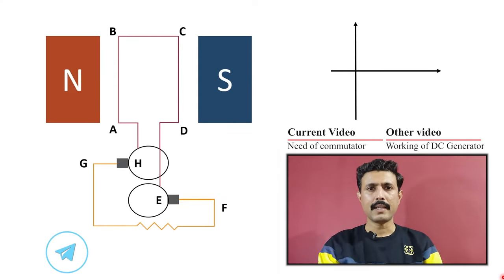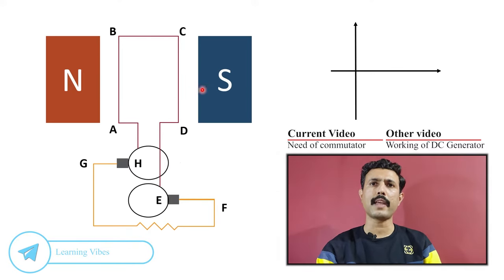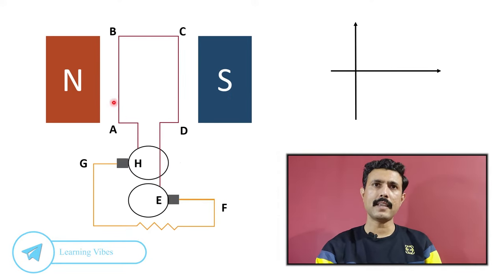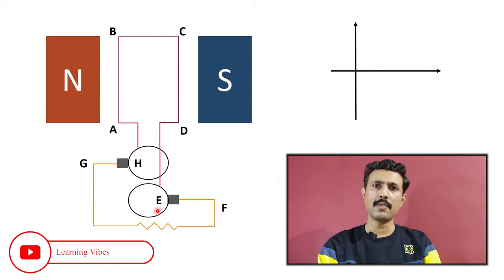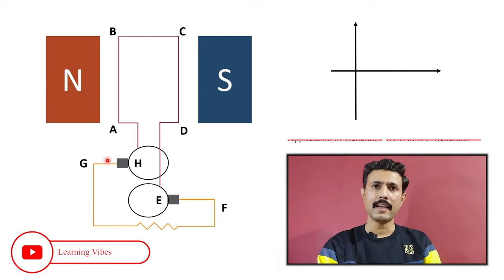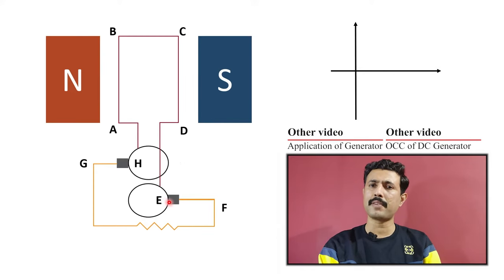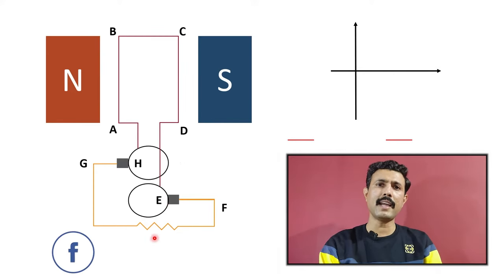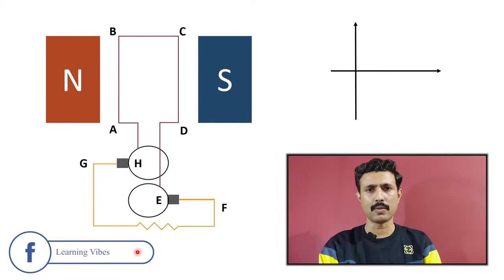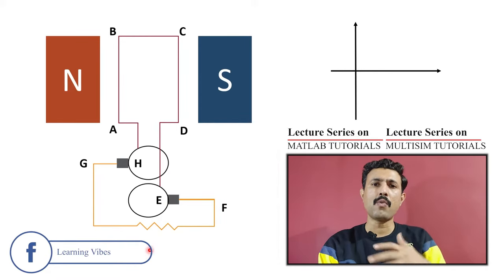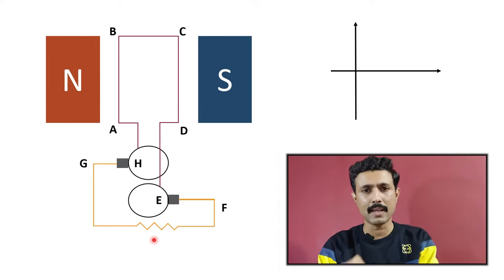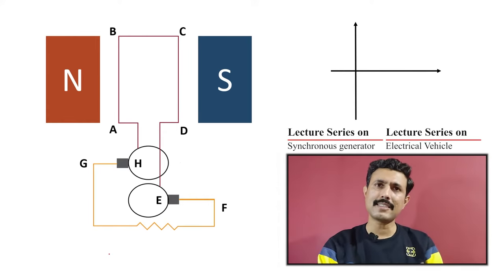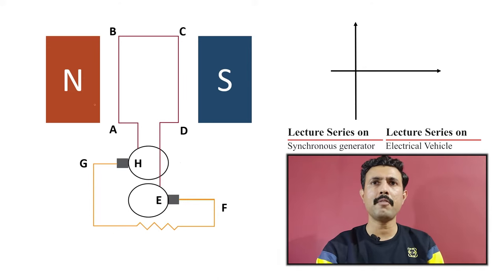Let me introduce our assembly. Here we have two poles — N pole and S pole. A, B, C, D are the conductors. We will assume this is a rotor. Here we have two slip rings, a brush assembly, and a connected load. We will understand what happens if there is no commutator, and what will happen if there is a commutator.